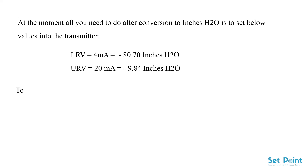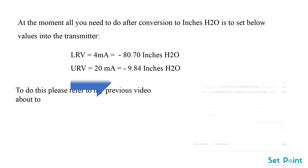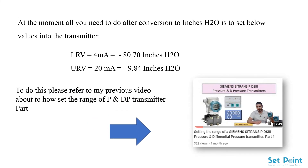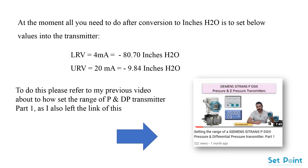To set these values into the DP transmitter, please refer to my previous video about how to set the range of P and DP transmitters, part 1. I also left the link of this video in the description box below.